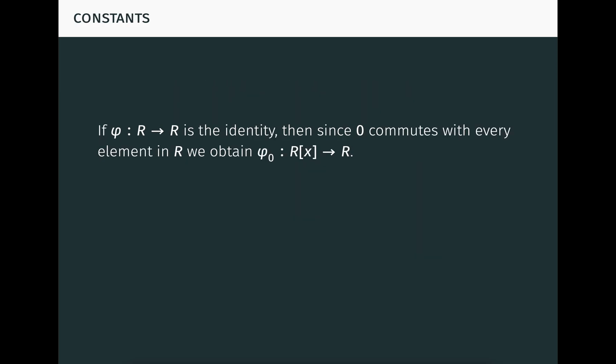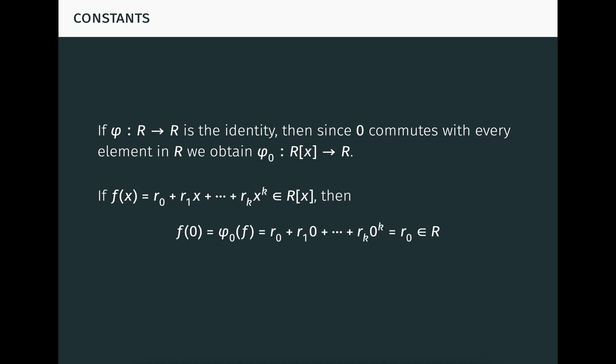The elements of this ring are sometimes called polynomials in A. On the other hand, if phi is the identity homomorphism on R, then since zero commutes with every element in R under multiplication, we obtain a substitution homomorphism phi_zero from polynomials over R to elements of R. If f is the polynomial seen here, then f of zero is the element seen here, which is just the constant term of the polynomial. This is just the type of zero substitution we performed earlier.